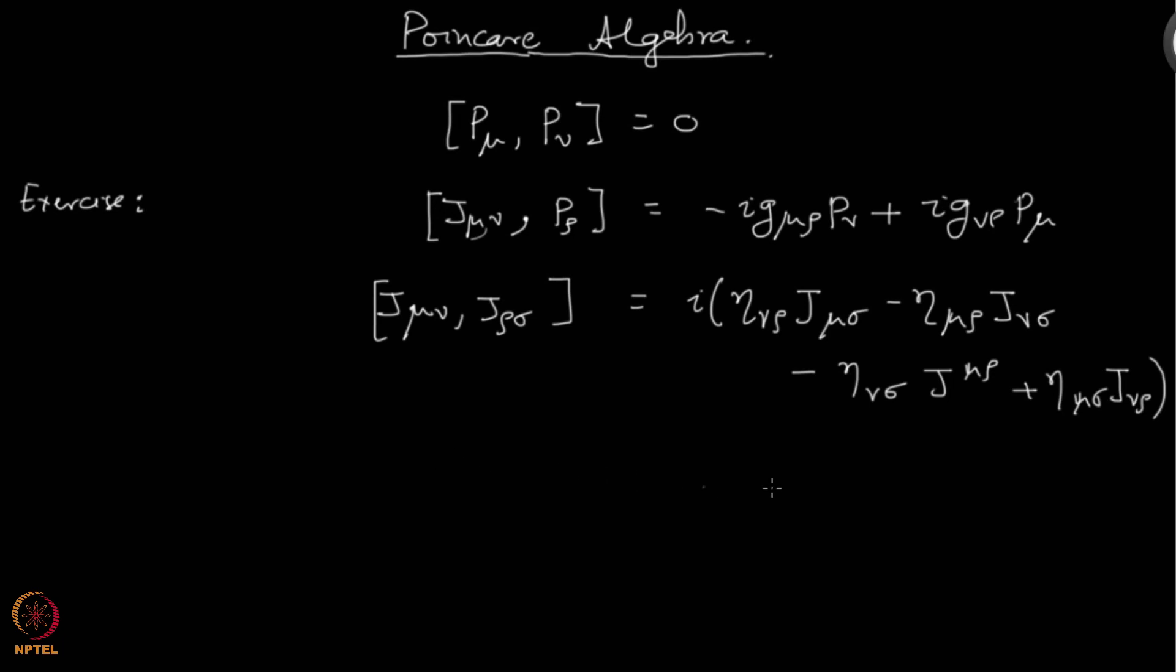That is coming from one particular representation. All this, the way we have found, is we have been studying this using a particular representation, you can say it that way. But we can think more abstractly about this and say that they have a meaning on their own, and then one could look at all possible representations of this algebra.